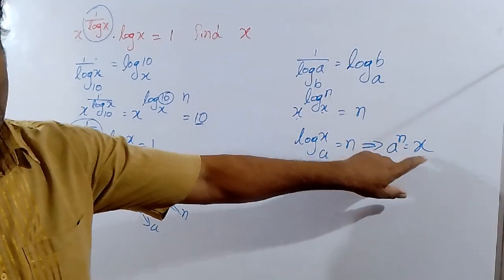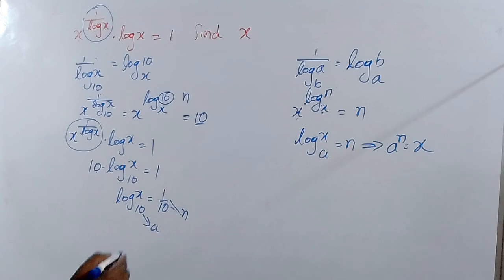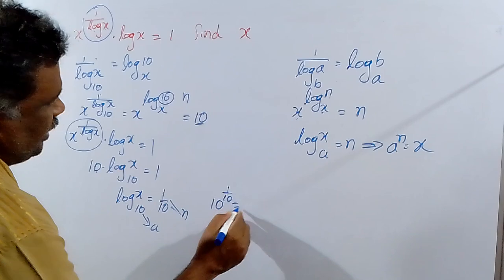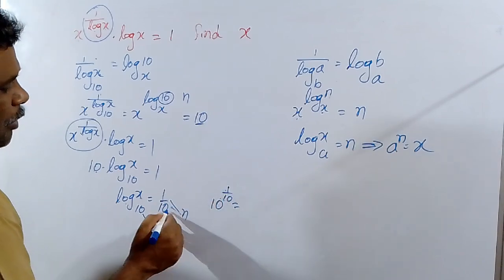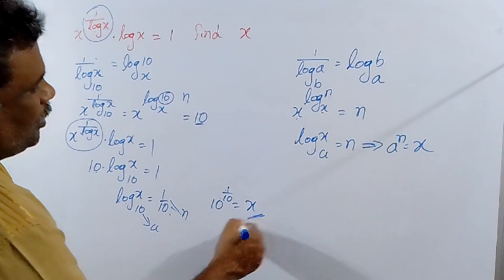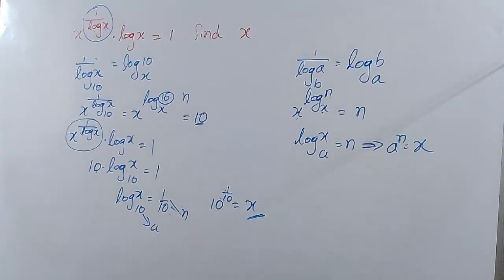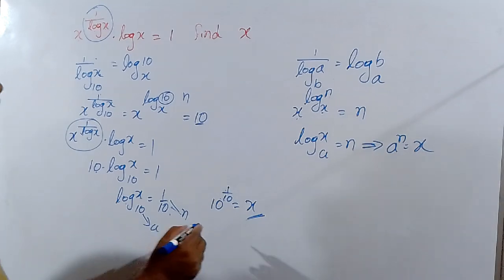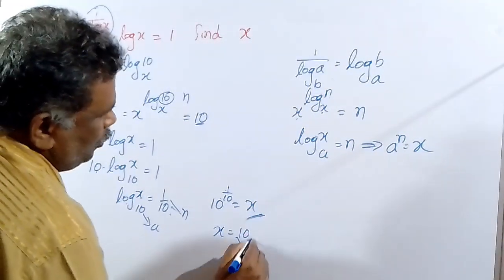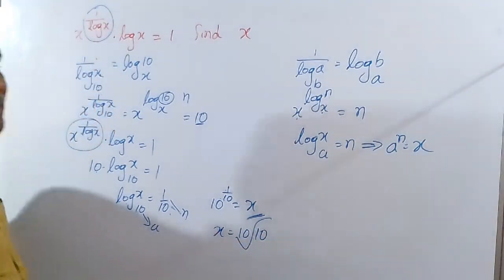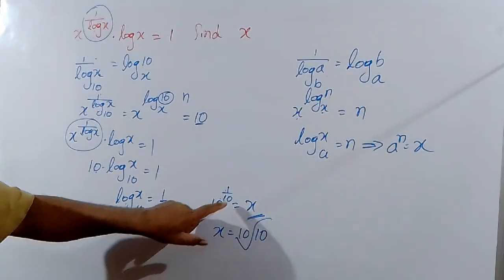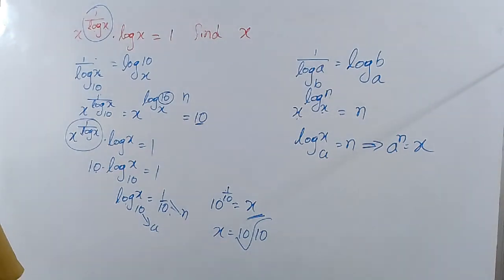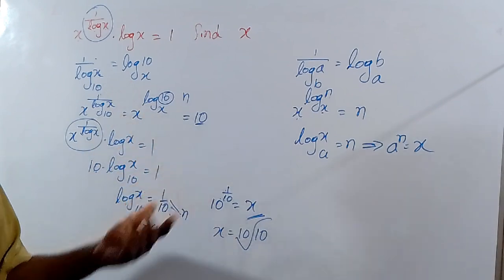So that is the x value. So x is equal to 10 power 1 by 10. So x is equal to 10th root of 10. So 10 power 1 by 10 is equal to 10 root of 10. This is the same answer. x is equal to 10 power 1 by 10.